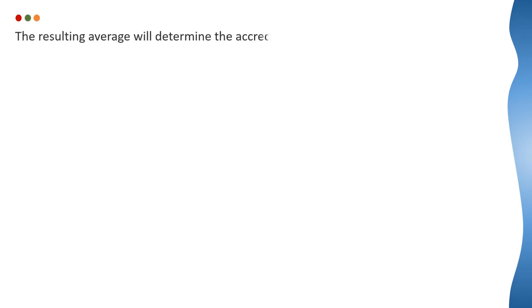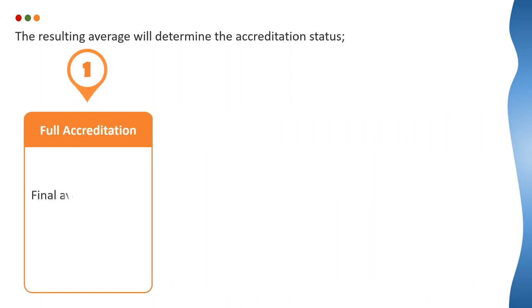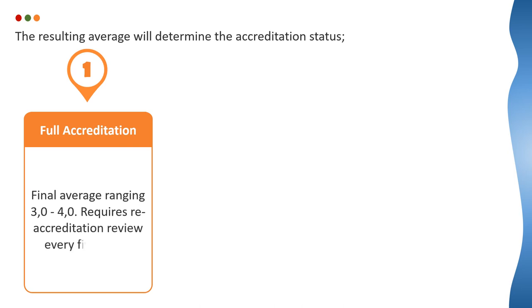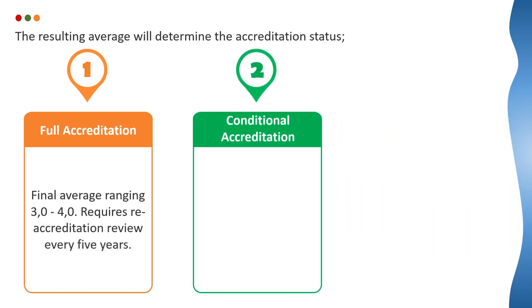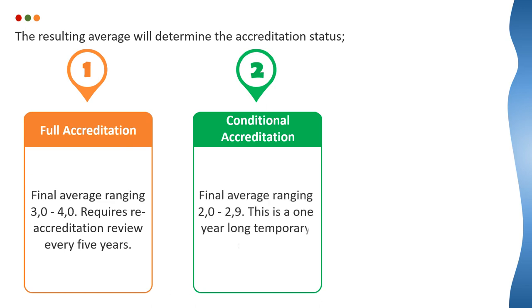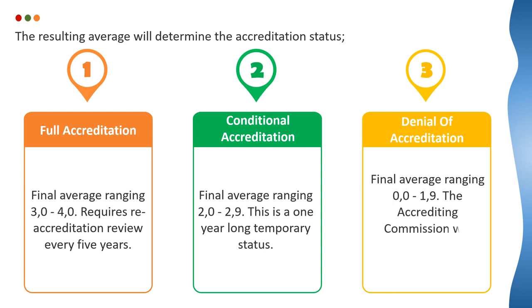The resulting average will determine the accreditation status. Full accreditation: final average ranging 3 to 4, requires re-accreditation review every 5 years. Conditional accreditation: final average ranging 2 to 2.9, this is a one-year-long temporary status. Denial of accreditation: final average ranging 0 to 1.9. The accrediting commission will explain the reasons for the denial.